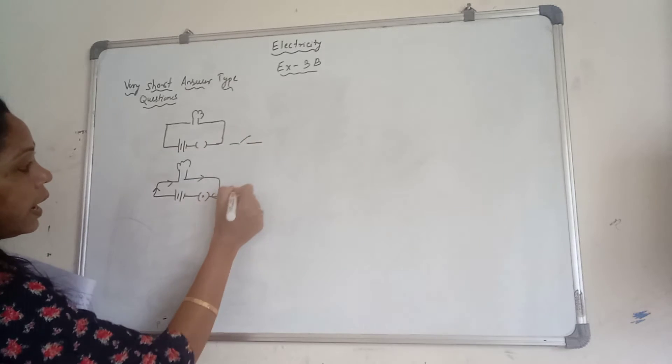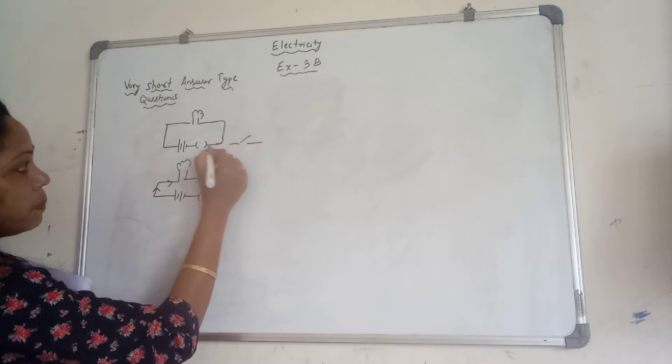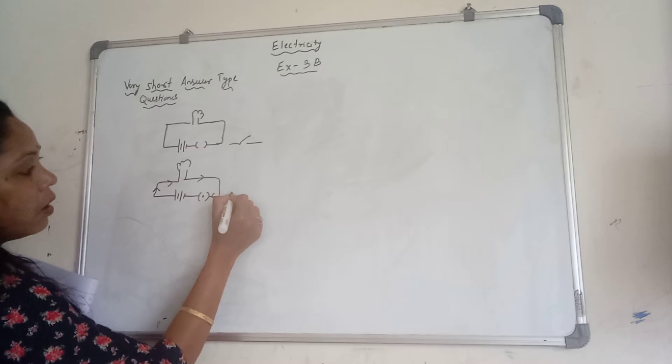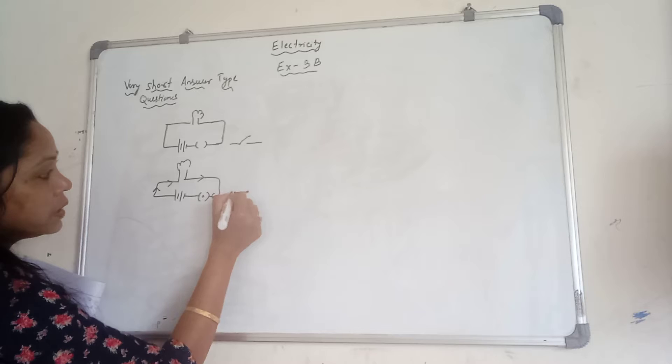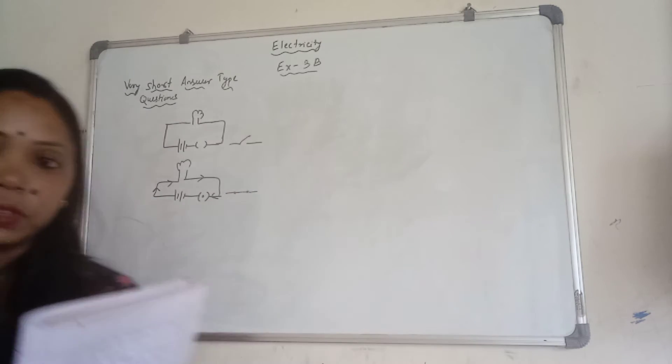You can use the symbol of key like this also. This is for open and in place of this symbol, you can use this one also. Or for this closed, you can use like this, two dots and by joining these two dots.